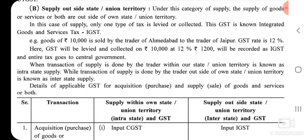When a transaction of supply is done by a trader within their own state or union territory, it is known as Intrastate Supply. When a transaction of supply is done by a trader outside of their own state or union territory, it is known as Interstate Supply.